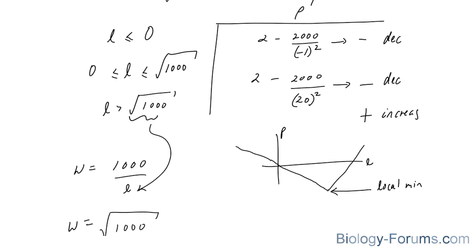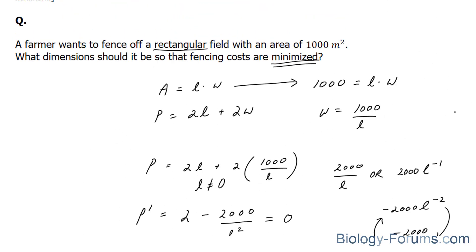So to conclude our question, they were saying, what dimension should it be so that the fencing costs are minimized? Well, the length needs to be the square root of 1,000 meters, and the width needs to be the square root of 1,000 meters.